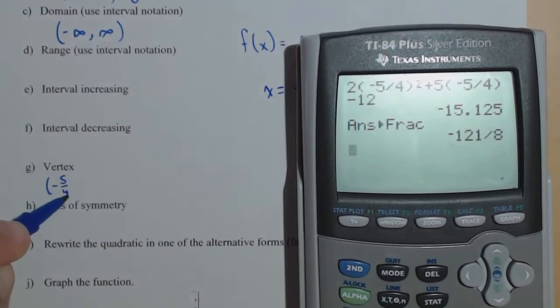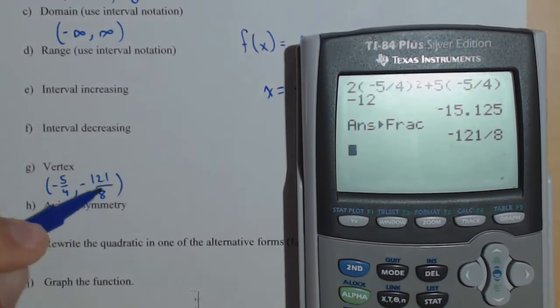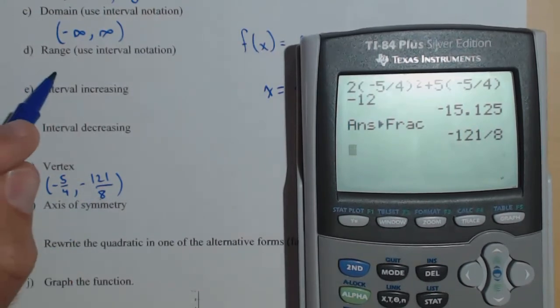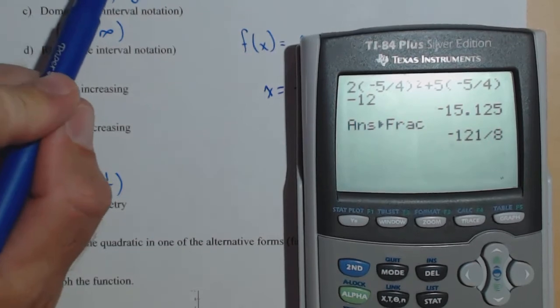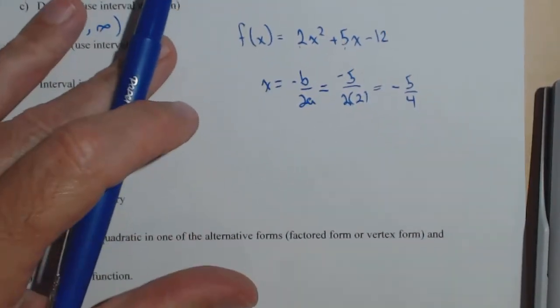It was negative 5 fourths, comma, negative 121 over 8. That's going to be used in our range. It's either going to be the upper bound or the lower bound. We can tell right now, because if we look at our quadratic, it opens upwards.